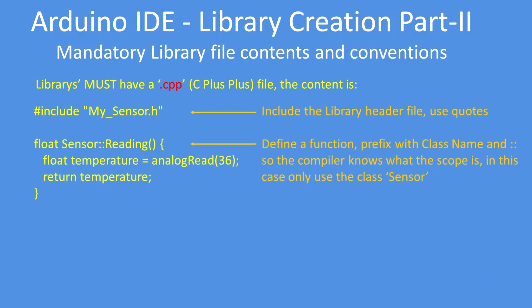Similarly, all Arduino IDE library files must contain a dot CPP, a C++ file. That file must include the class name dot H — for example, my sensor dot H or LED controls dot H. You must then define the functions, but you must prefix the function name with the scope resolution operator, which is the class name followed by double colons. For example, 'sensor::' must be the prefix to all functions. This tells the compiler that this function is part of the class, is a class member.